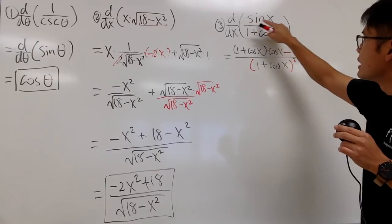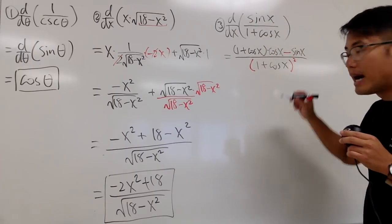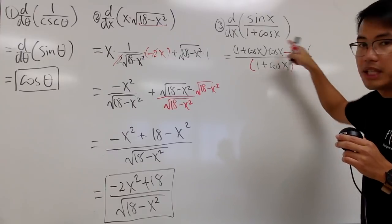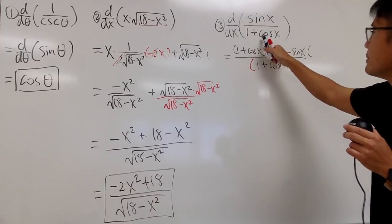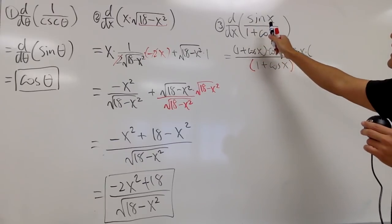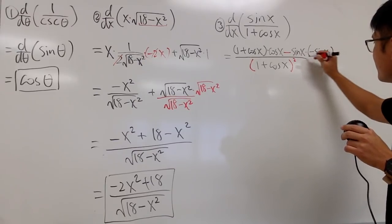then, for the quotient rule, we are going to subtract the top function, which is sine x, and then multiply by the derivative of the bottom. Derivative of 1 is 0. Derivative of cosine x is negative sine x. So, we just multiply by negative sine x here.